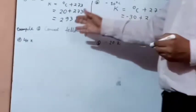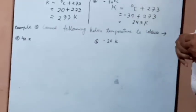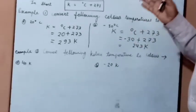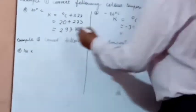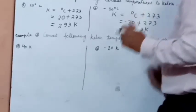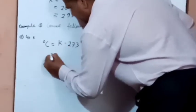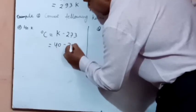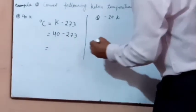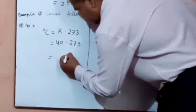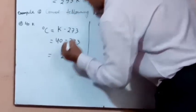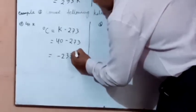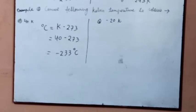Similarly, if we want to convert Kelvin temperature to Celsius temperature, we subtract 273 from the given number. For example, 40 Kelvin. First, write the formula: degree Celsius = Kelvin minus 273. Given temperature is 40 Kelvin, so we put 40 minus 273. The answer is minus 233 degree Celsius.